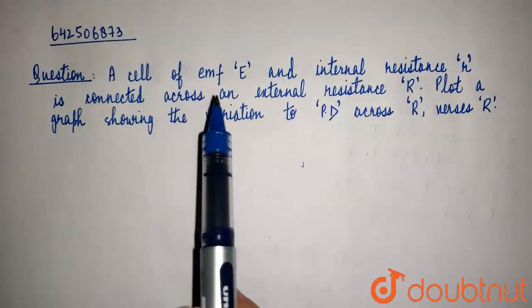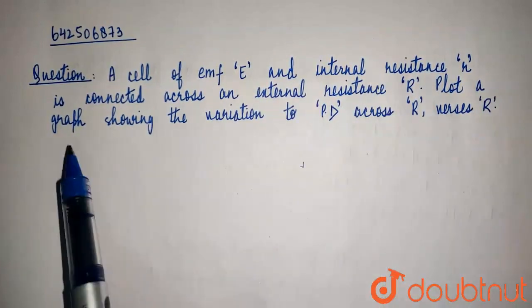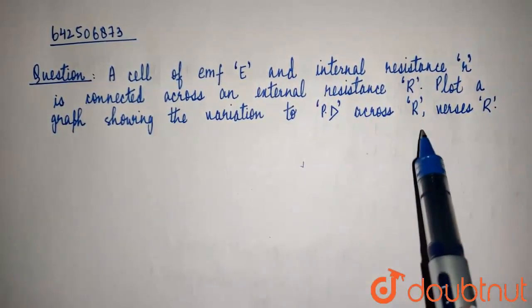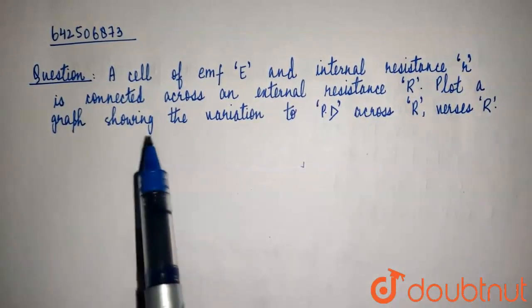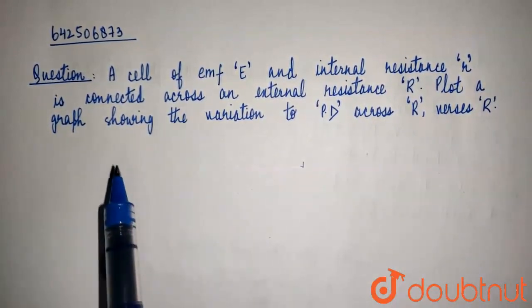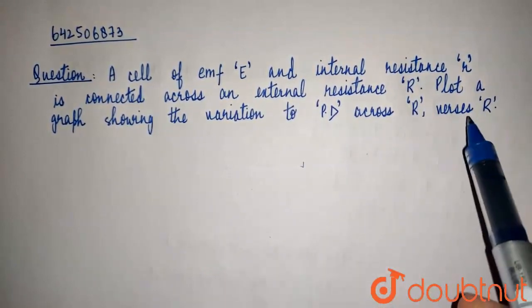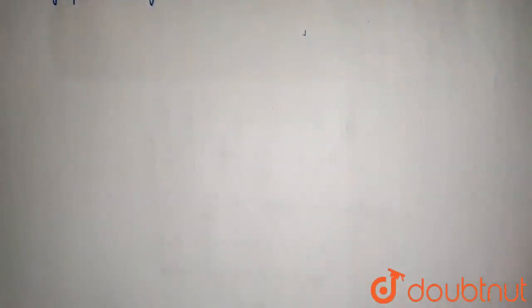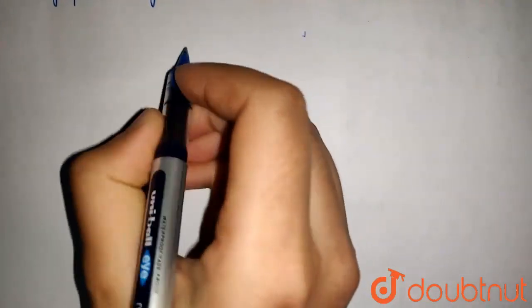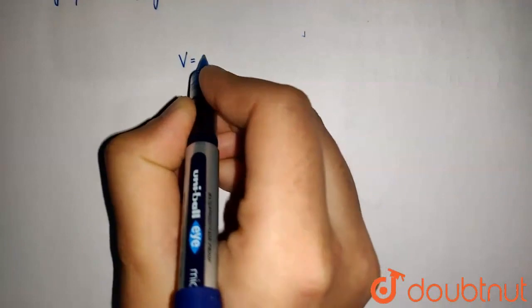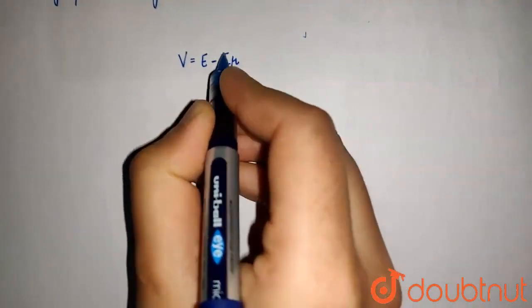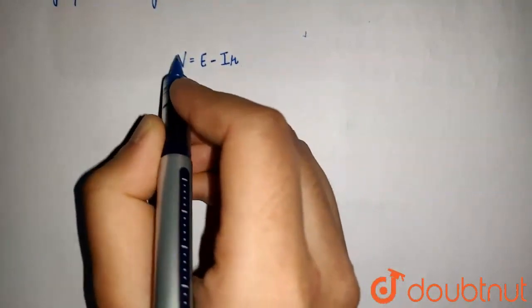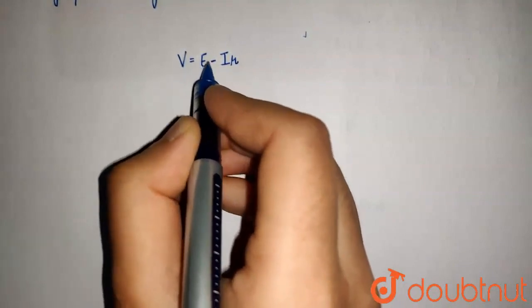The question states: A cell of EMF E and internal resistance r is connected across an external resistance R. Plot a graph showing the variation of potential difference across R versus R. So, we have a cell and then we have to plot a graph between the potential difference across R versus the external resistance itself. I'm pretty sure that everyone must be knowing this equation. That is V equals E minus IR, where IR is the potential drop through the internal resistance and V is the potential difference across R and E is the EMF of the cell.